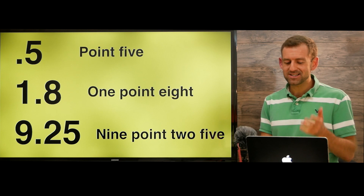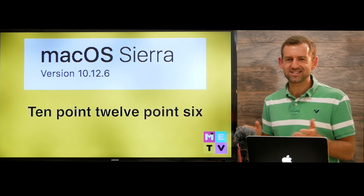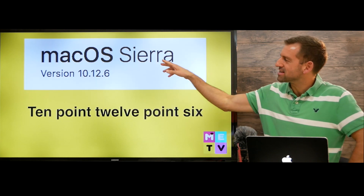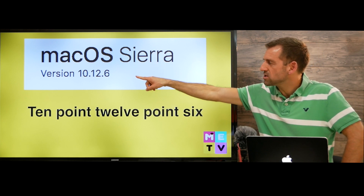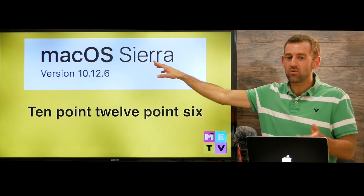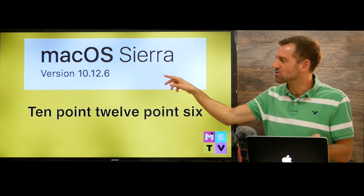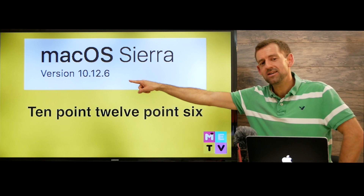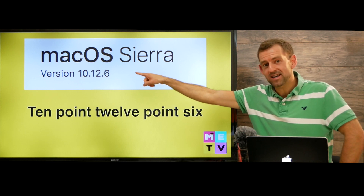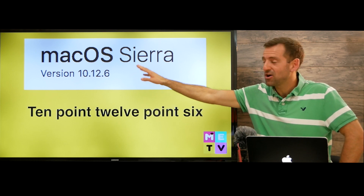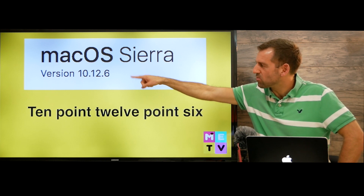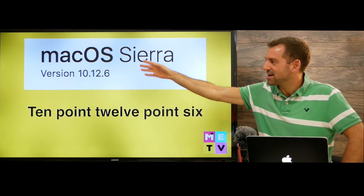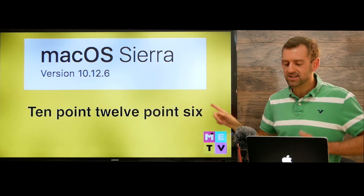But there's an exception — in English there's always exceptions. So take a look at this: macOS Sierra version 10.12.6. This is the version of macOS that I'm using on my computer right now, and it's 10.12.6. So there we say the whole numbers — we don't say 10.12.6. It's 10.12.6.